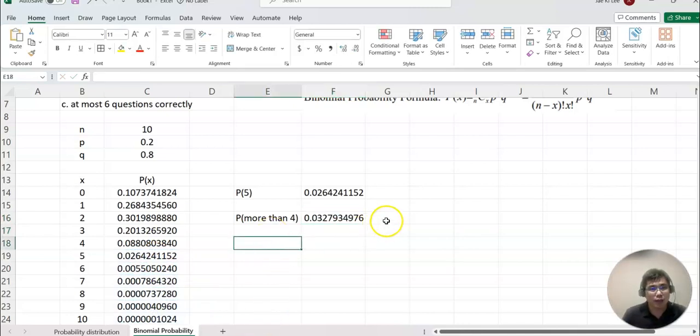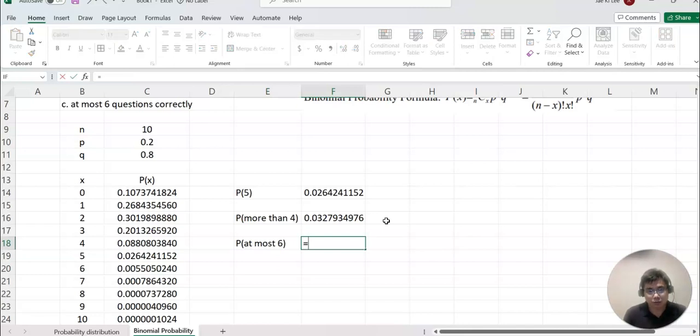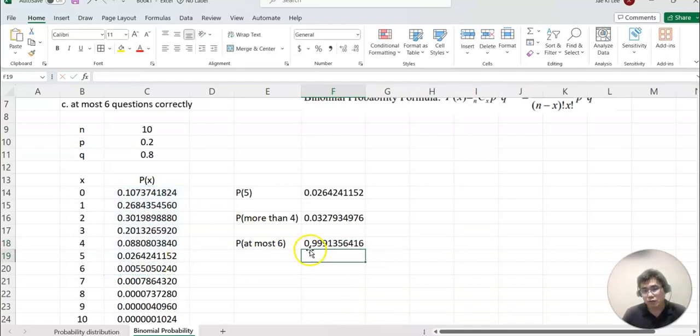And then at most six, probability at most six. At most six means from zero to six here, so sum open parentheses and then we select zero to six, enter. That will be the answer for these questions.